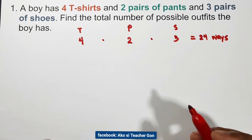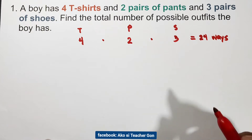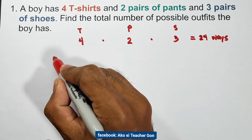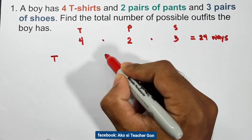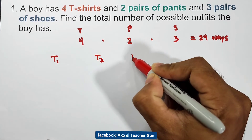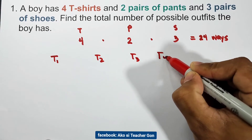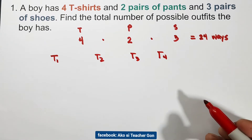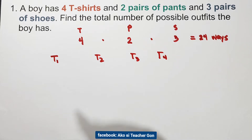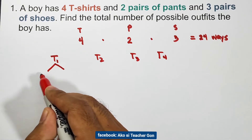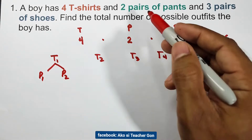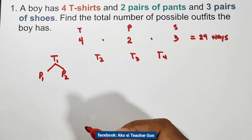For a complete visualization, let us use a tree diagram. We have four t-shirts: t1, t2, t3, and t4. We compare each t-shirt to pants. We have two choices — p1 and p2 for the pair of pants.